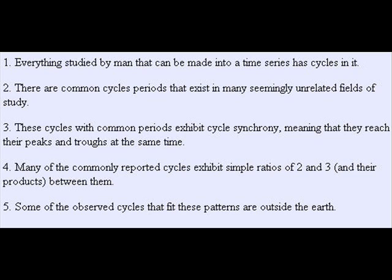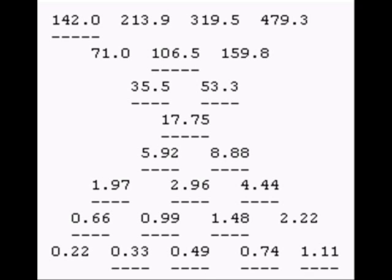Many of the commonly reported cycles exhibit simple ratios of 2 and 3 between them. As shown in this diagram, starting from 17.75 years, Dewey produced ratios of 2 and 3. The 2 is running diagonally up to the left and down to the right, and the 3 is the other way. All these common cycle periods in years that are underlined here were found in a number of different fields of study.